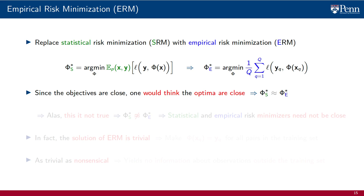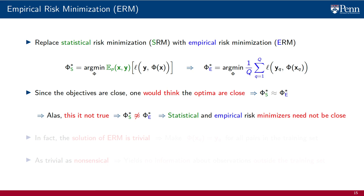Given that the objectives are close for any function phi — which follows from the most basic fact of probability theory — one would think that the optima are also close; that phi*_s and phi*_e are similar if the number of samples Q is sufficiently large. One would be thoroughly disappointed. This is not true. The statistical minimizer phi*_s and the empirical minimizer phi*_e need not be close.